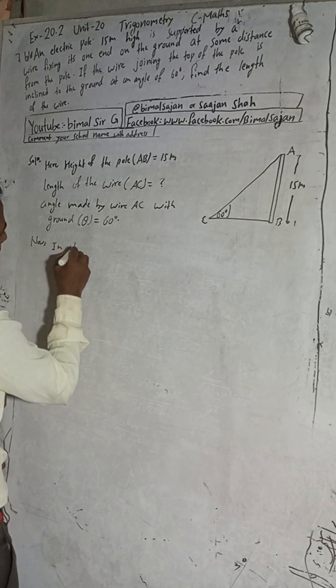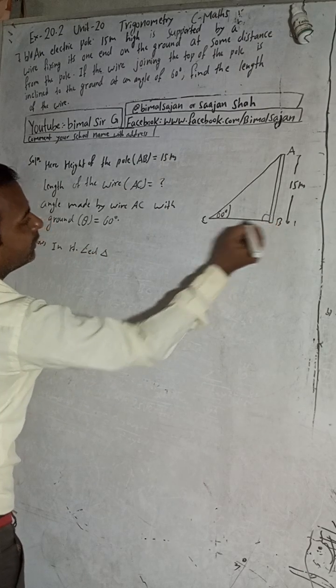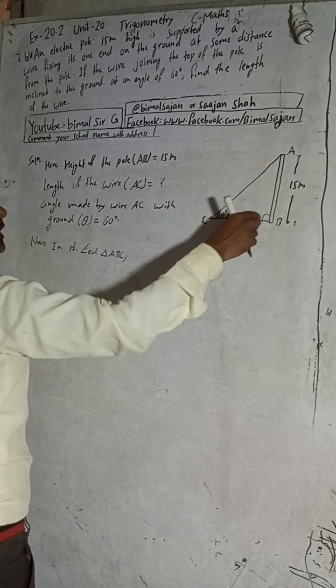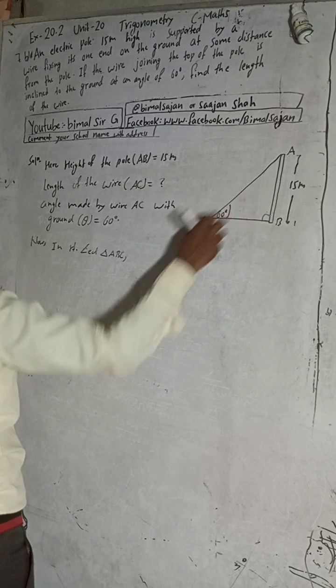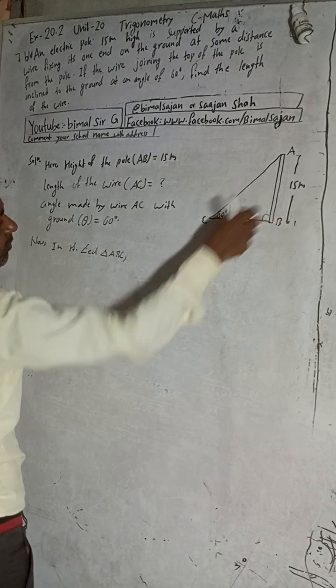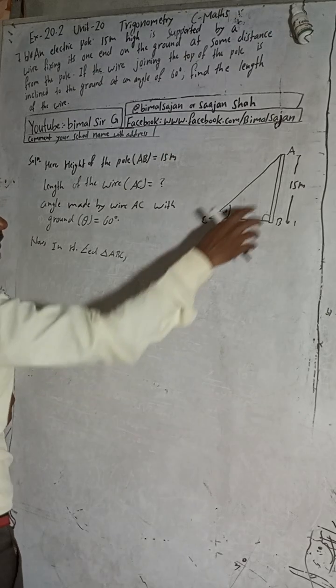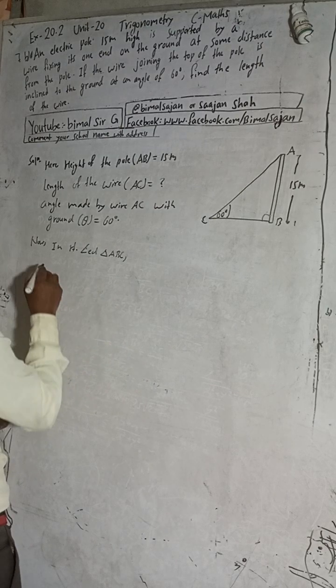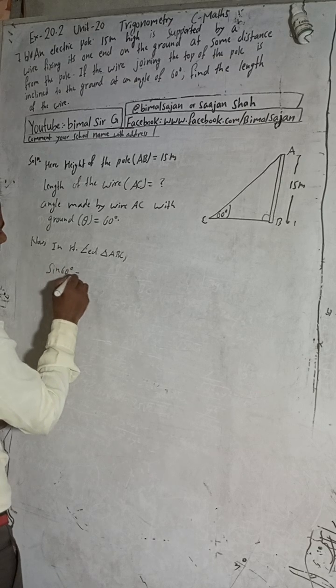Now in right angle triangle ABC, this is 90 degrees. To find AC, with reference to 90 degrees this will be our hypotenuse, and with reference to 60 degrees this is our perpendicular. So we can take P by H formula. P by H is sin theta, so sin 60 degrees equals P by H.